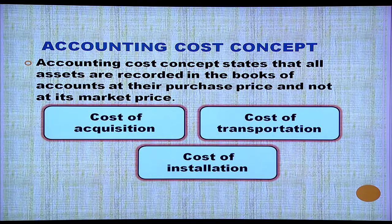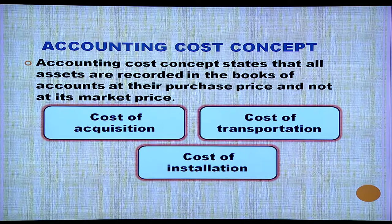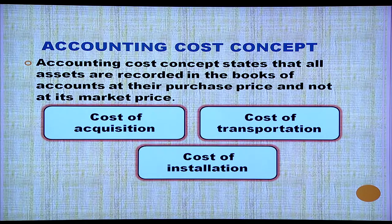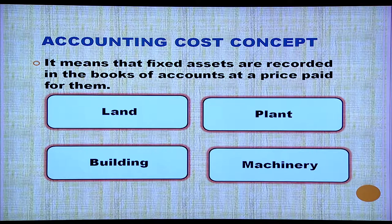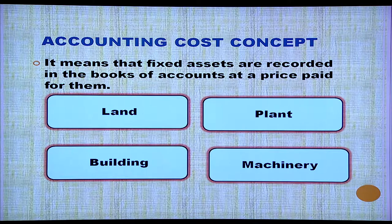Accounting Cost Concept states that all assets are recorded in the books of account at their purchase price, not at market price. Cost of acquisition, cost of transportation, and cost of installation are added while recording the cost of a fixed asset. Fixed assets such as land, building, plant, and machinery are recorded in the books of account at the price paid for them.